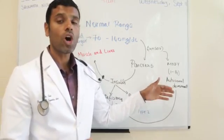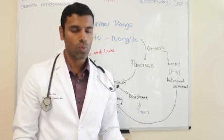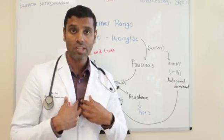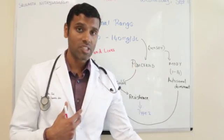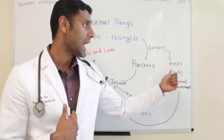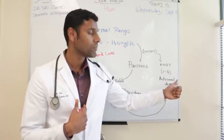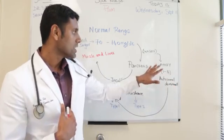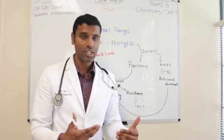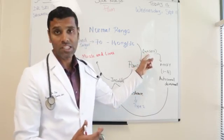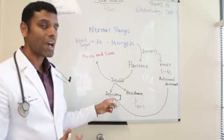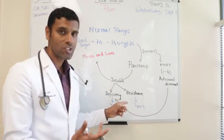MODY is an autosomal dominant genetic condition. If I have maturity onset diabetes of the young, there is a 50% chance my offspring will also have it. Even though the pancreas still has enough stores of insulin, since there is a problem with the sensor it is not secreting properly, and thereby there is a relative insulin deficiency.